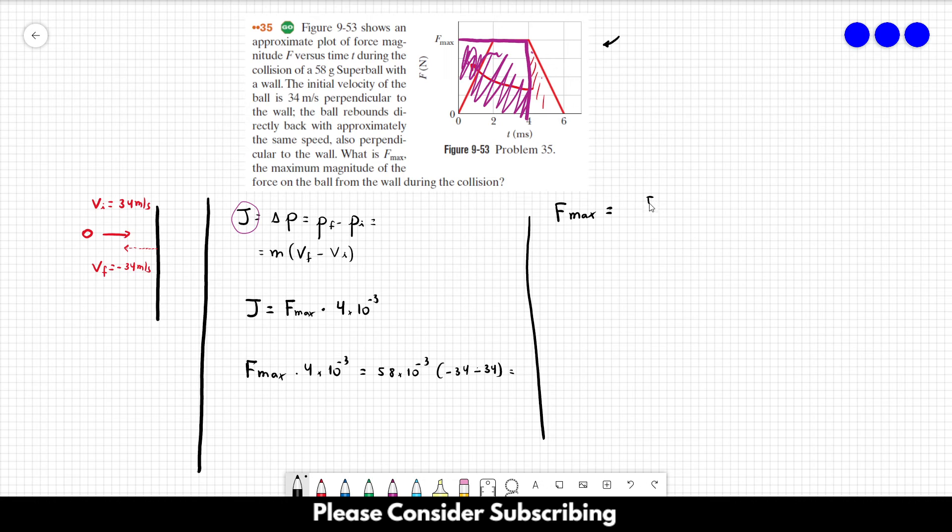So F_max is equal to 58 times 10 to the minus 3, times minus 68, divided by 4 times 10 to the minus 3. And this will give us minus 9.9 times 10 to the second newtons.